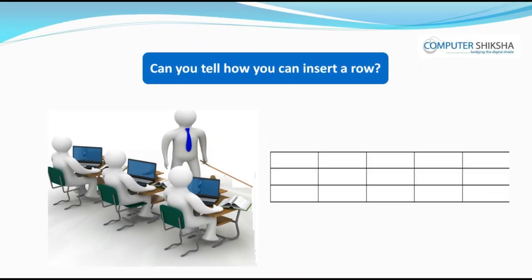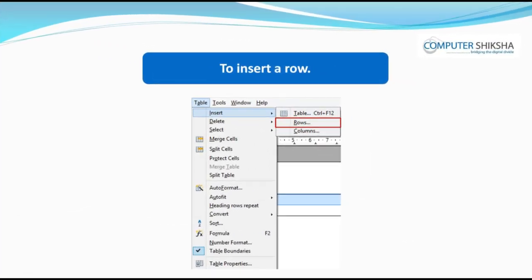Can you tell how you can insert a row? To insert a row, first we need to bring our cursor to a row just above the place where we need to insert the row in the table and click once with the left button. Next, you will need to go to the insert option of the table menu and click once on the row option. A box appears. Using this, you can insert the row you need.